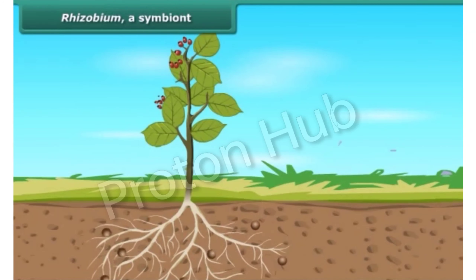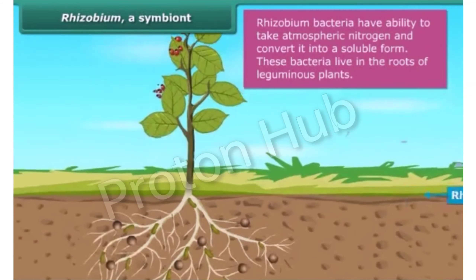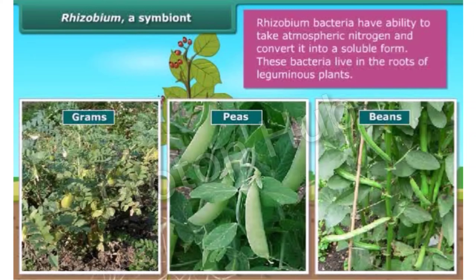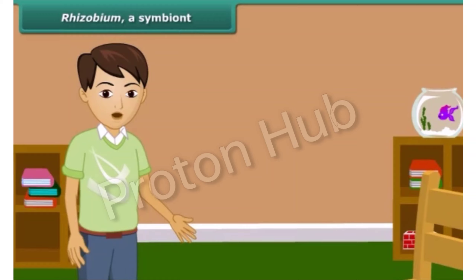Plants require nitrogen in soluble form. The bacterium called Rhizobium can take atmospheric nitrogen and convert it into a soluble form. These bacteria live in the roots of gram, peas, moong beans, and other legumes, and provide them with nitrogen. In return, the plants provide food and shelter to the bacteria. Thus, Rhizobium shows a symbiotic relationship.